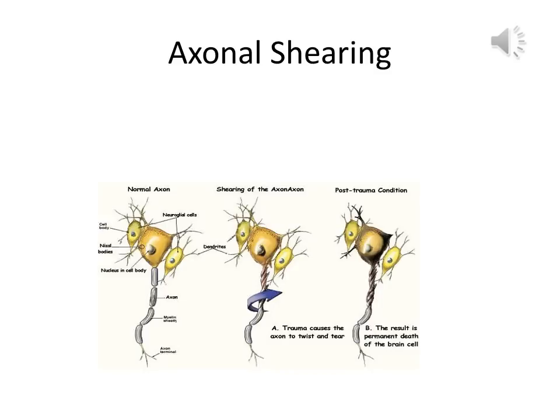Sometimes the shearing results in axonal death, and other times it alters axonal conduction velocity and network activity. The symptoms can often be unusual, sometimes subtle, and difficult for clients to articulate.